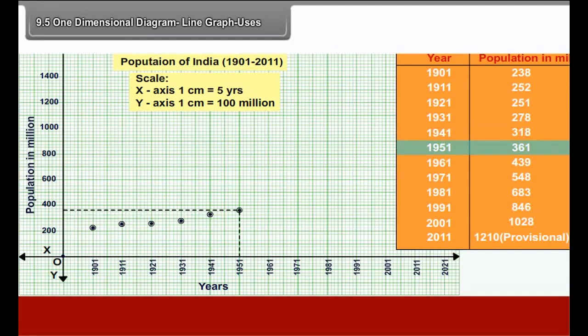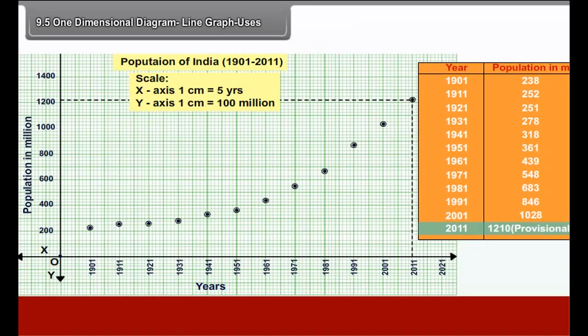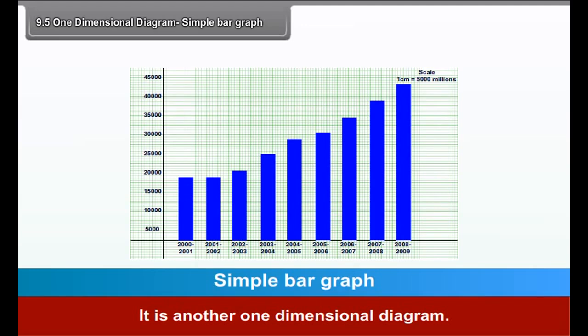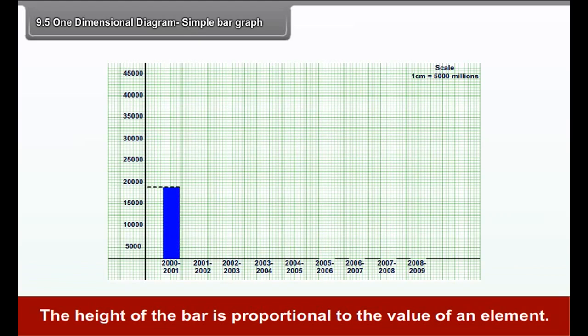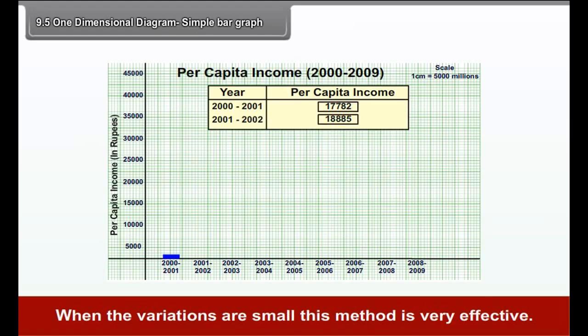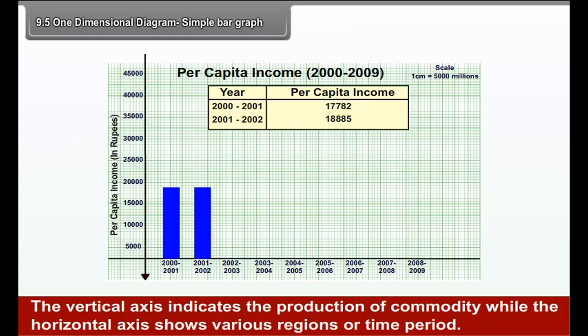Exercise 1. Draw a simple line graph representing population of India 1901-2011. Year 1901: 238 million, 1911: 252, 1921: 251, 1931: 278, 1941: 318, 1951: 361, 1961: 439, 1971: 548, 1981: 683, 1991: 843, 2001: 1028, 2011: 1210 million (Provisional).